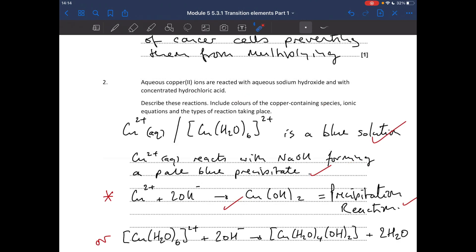Question 2 now. We've got to describe the reactions of aqueous copper 2 ions with aqueous sodium hydroxide and concentrated hydrochloric acid. Colours of copper containing species, ionic equations, and type of reactions taking place for both. We'll start with the first one. Copper 2 plus aqueous, or to give it its complete formula, copper hexa-aqua 2 plus. It's a blue solution. They react with sodium hydroxide forming a pale blue precipitate. You can give the simple precipitation reaction equation, or you can give the more complicated one.